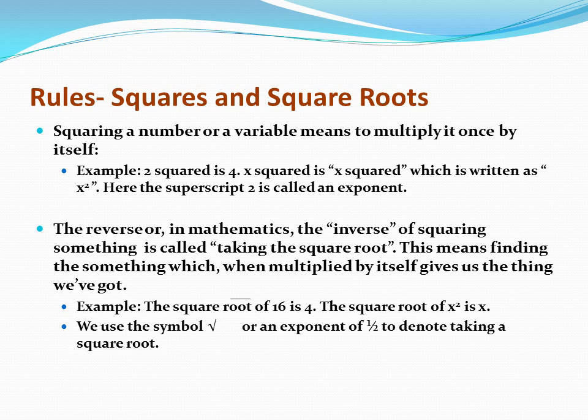Squares and square roots. Squaring a number or variable means to multiply it once by itself. Two squared is four, three squared is nine. The reverse, or in mathematics the inverse of squaring something, is called taking the square root. This means finding the something which, when multiplied by itself, gives us the number. For example, the square root of 16 is 4. The square root of x squared is x. We use this symbol, the root sign, or an exponent of one-half to denote taking the square root.